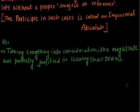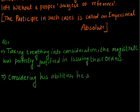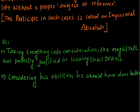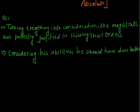'Considering his abilities, he should have done better.' In this sentence also, 'considering' is the present participle, and the subject of reference 'he' is not appropriate because somebody else considers his abilities. So the present participle does not have an appropriate subject of reference, yet it is accepted as a correct construction.